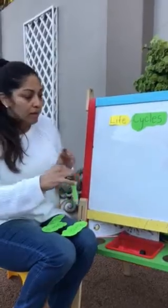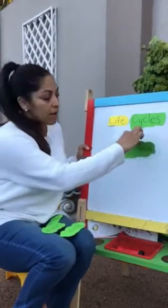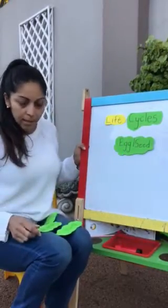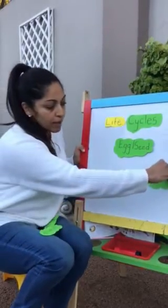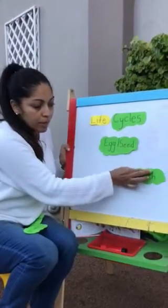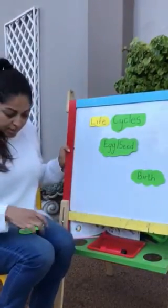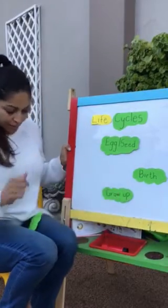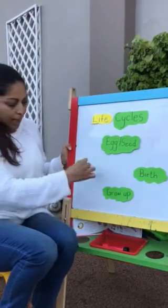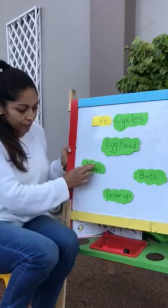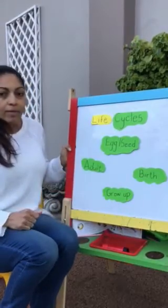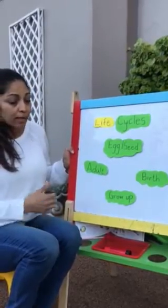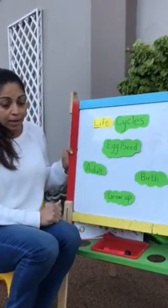The cycle that most living things go through would start as an egg or seed; from there they would have the birth process, then they go through the growing up phase, and then they become adults. The cycle begins again when the adults decide to have their own babies. And that is what we call the life cycle.